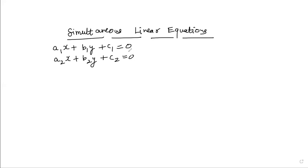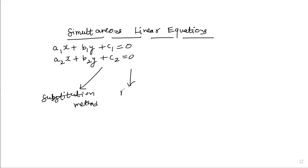If we want the solution of this pair of simultaneous linear equations, there are three methods to solve them, and we need to know all three because questions in this chapter often specify the method. The first is the substitution method, also called elimination by substitution. The second is the elimination method, where we eliminate by equating coefficients. The third is the cross multiplication method.